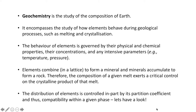Elements combine in a lattice to form a mineral, and minerals then accumulate to form a rock. So the composition of any given melt that crystallizes to form a rock exerts a critical control on what that type of rock will be. The distribution of elements is then controlled in part by its partition coefficient and thus its compatibility within a given phase.